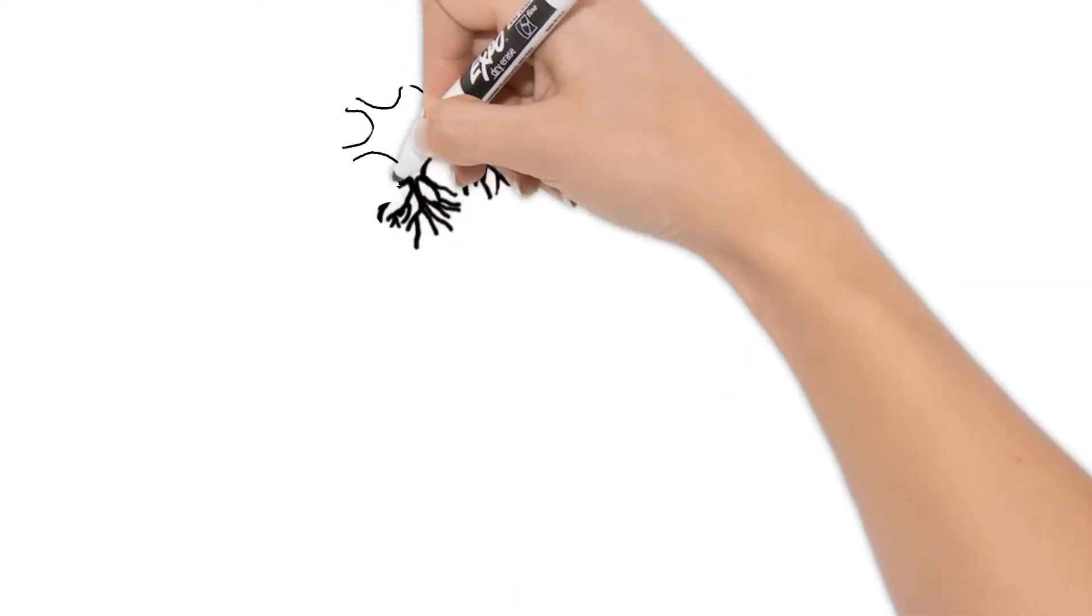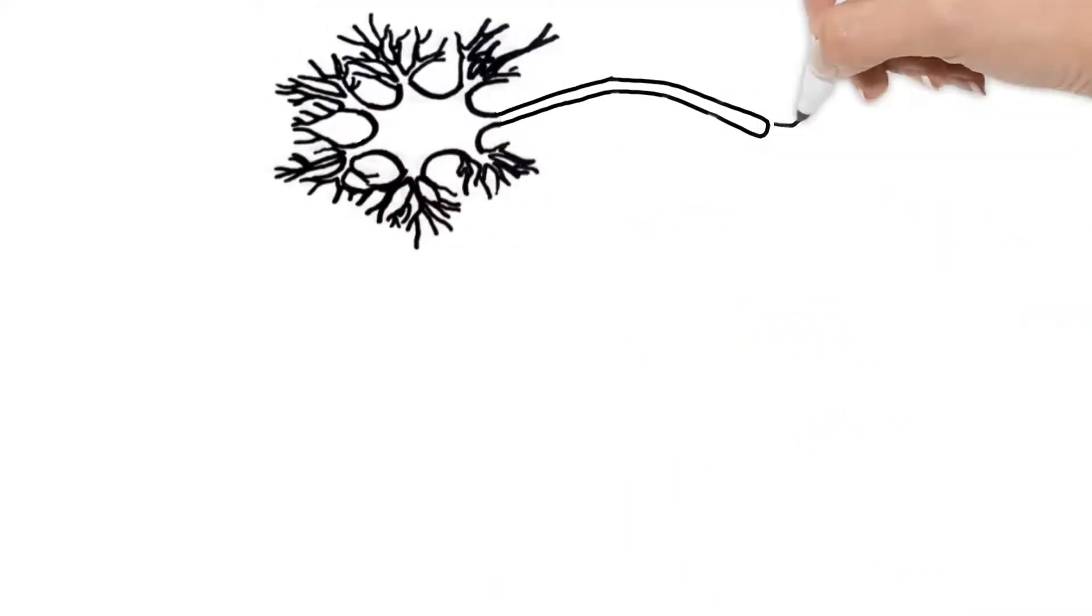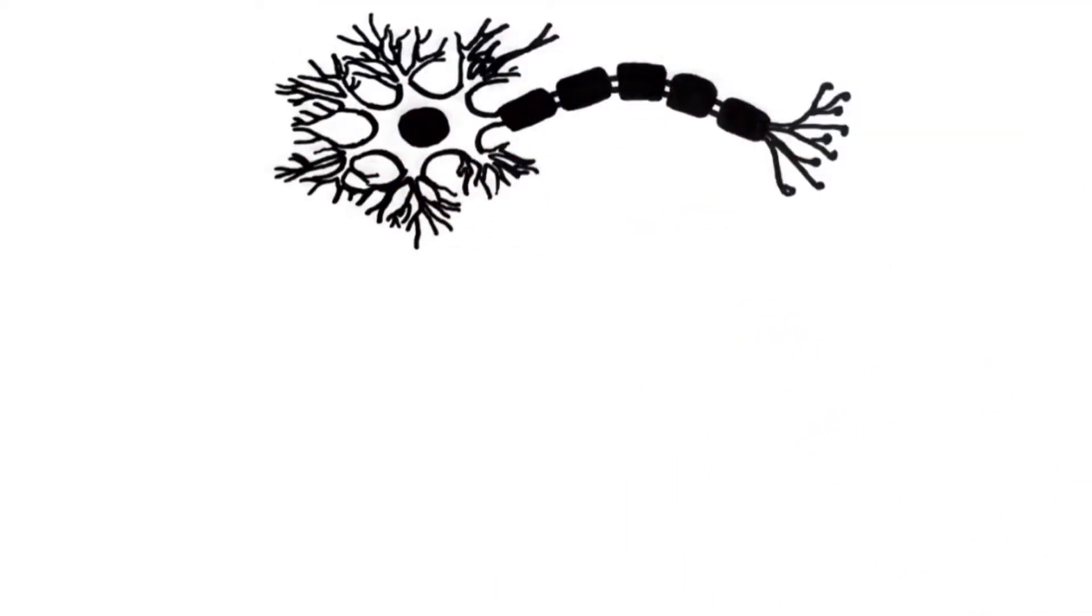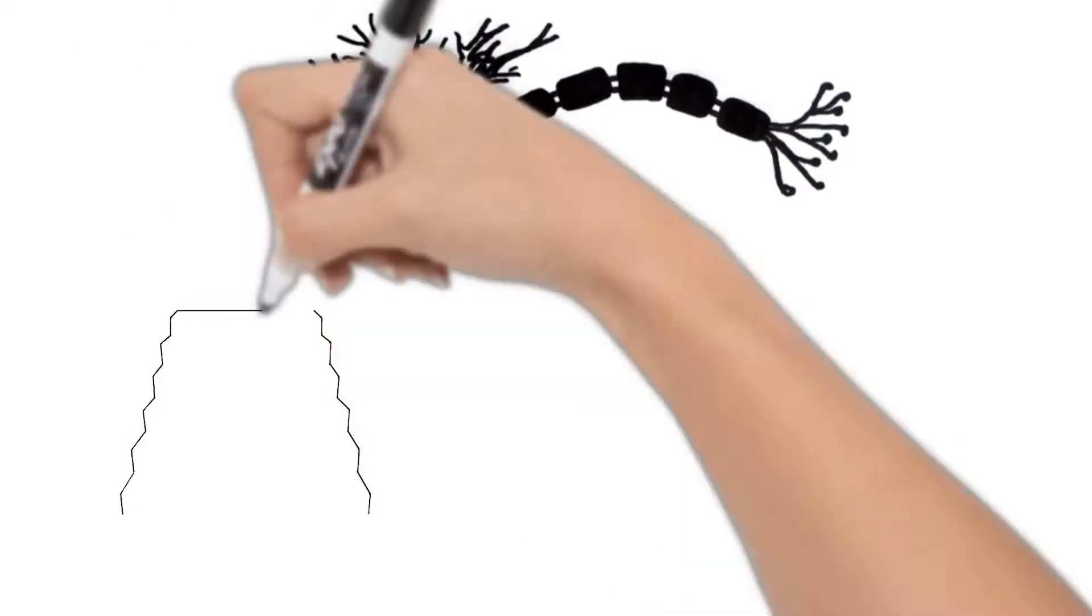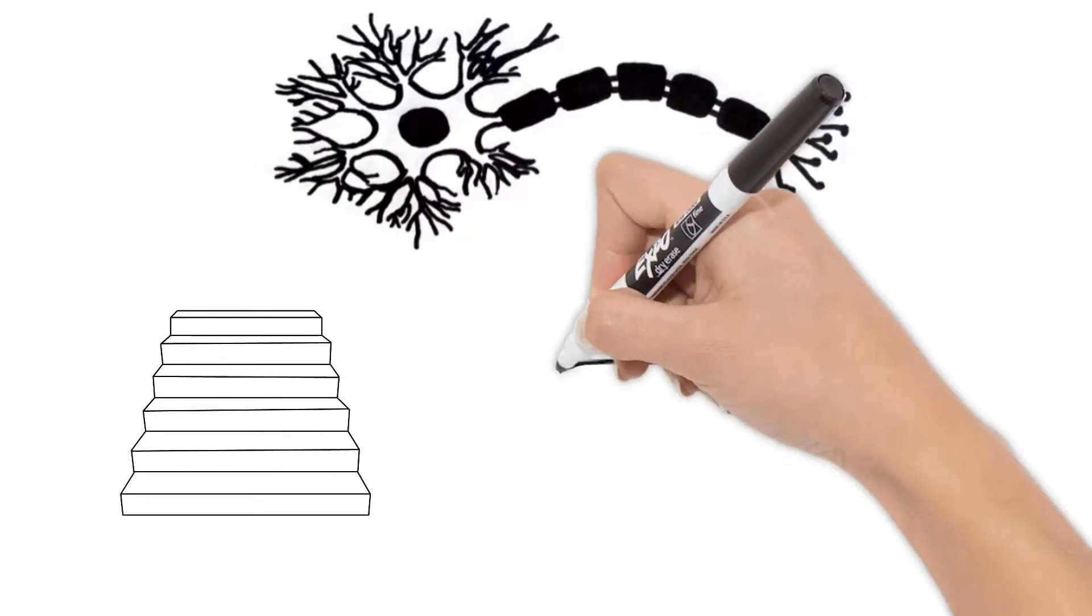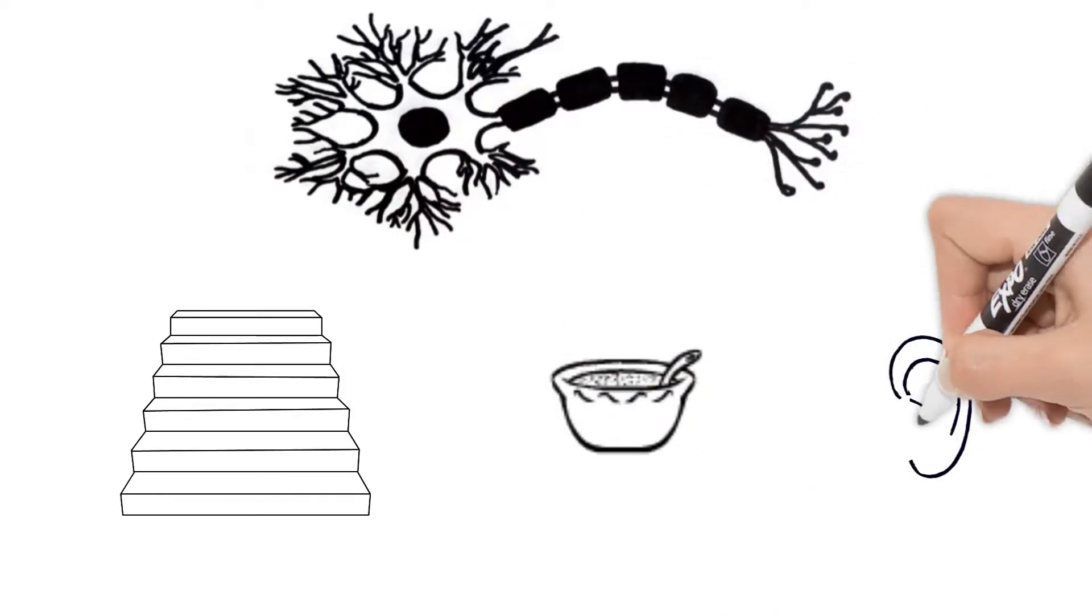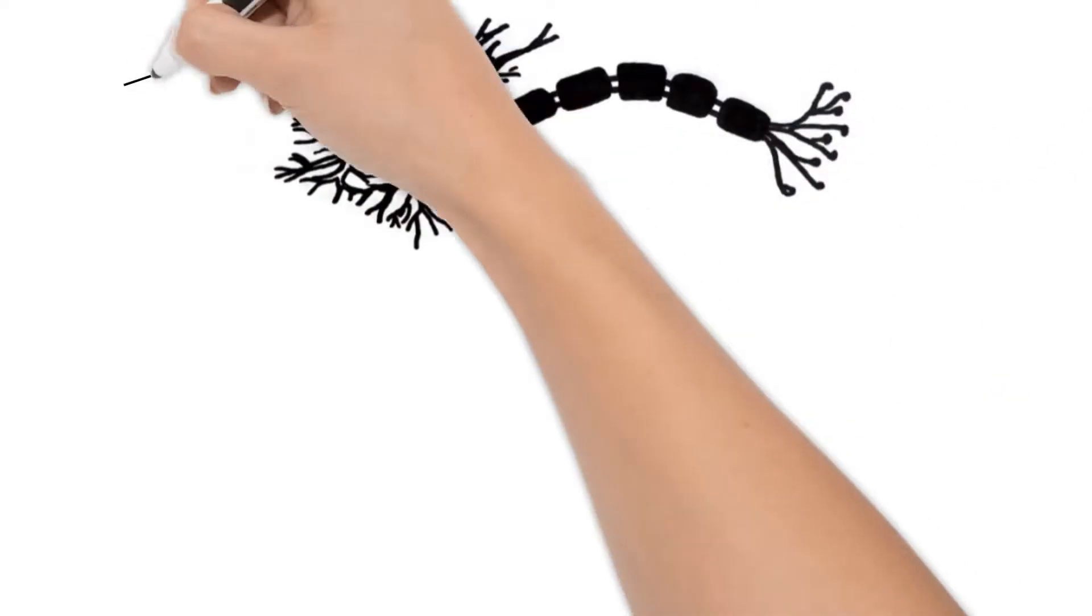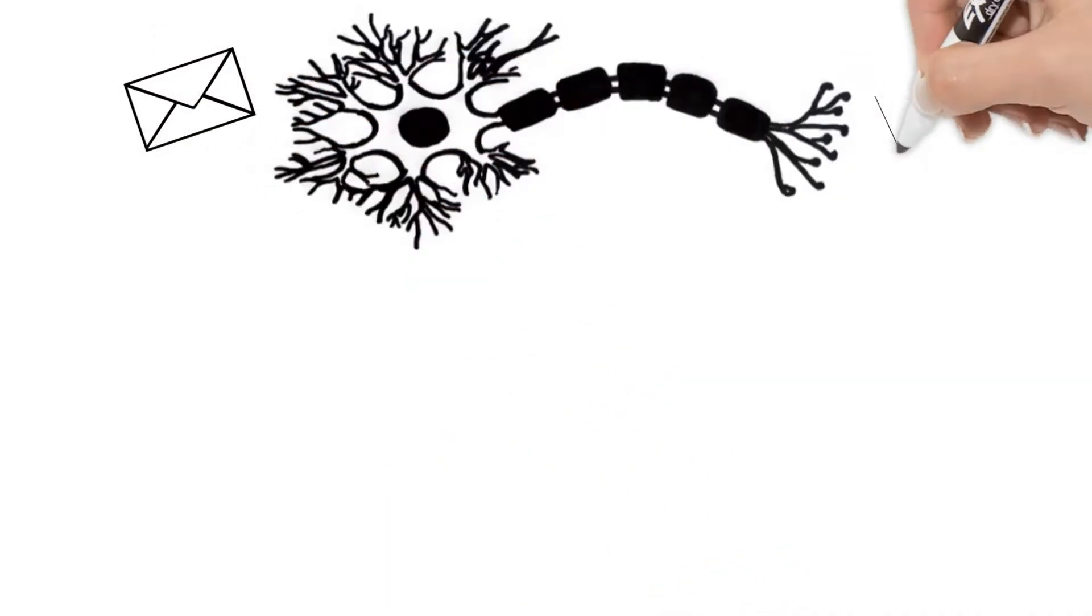In several videos now, we've learned neurons are cells of the nervous system responsible for getting messages where they need to go throughout your body. Messages such as walk up these stairs, this tastes bad, that music is too loud. So how does a message travel through a neuron?